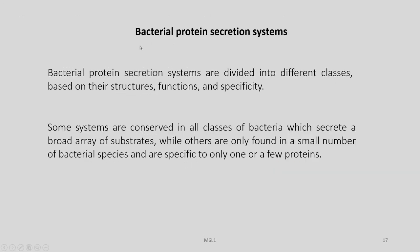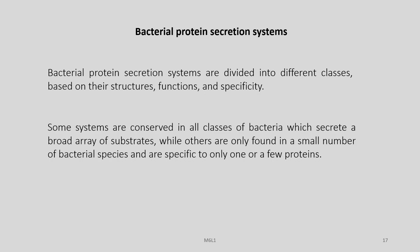Let us learn a little bit about the bacterial protein secretion system. We already know that there are at least two such systems, the T2SS and the T3SS. Bacteria deploy a multiple array of secretion systems, which we can divide into different classes based on their structure, function, and specificity. Some of the systems are conserved across all classes of bacteria and secrete a broad array of substrates, while others are only found in a small number of bacterial species and are specific to only one or a few proteins.